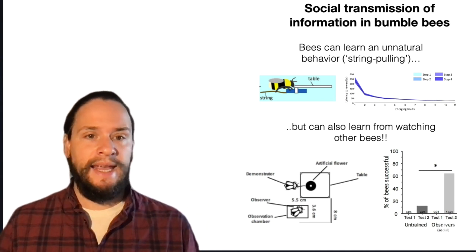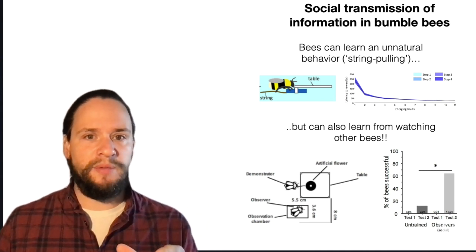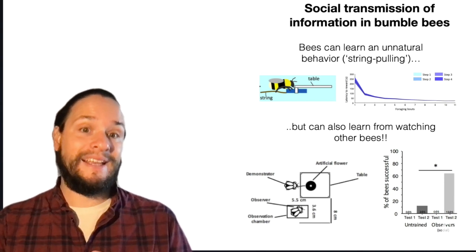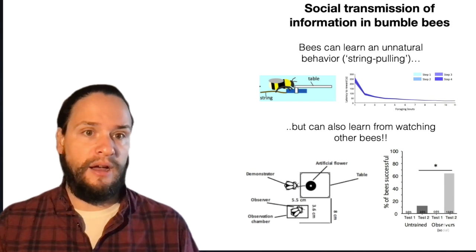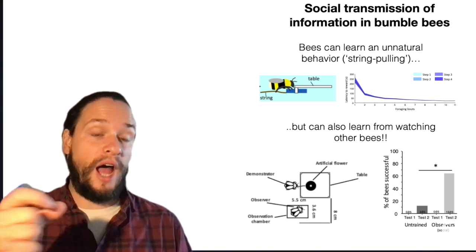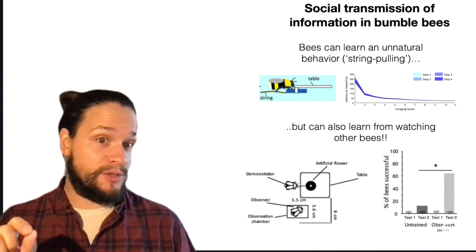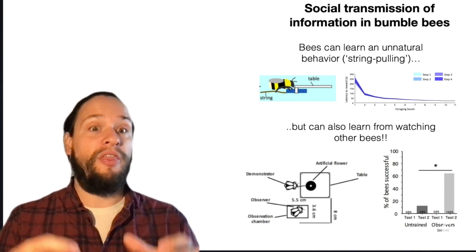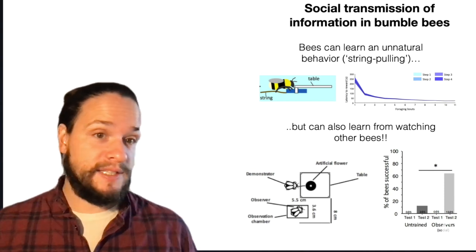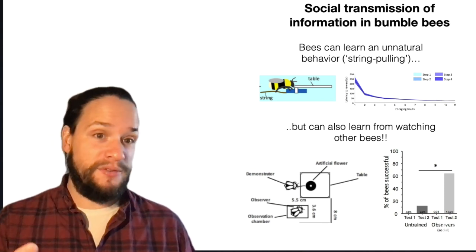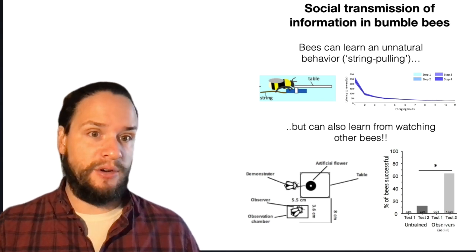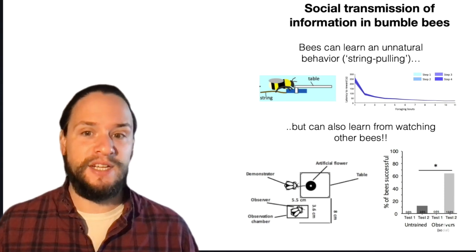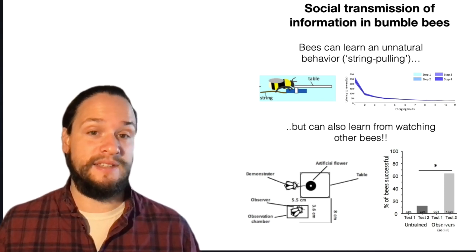But also, one of the most remarkable things is if, and this is a diagram down here, if you isolate a bee in a container next to, in a spot where she can watch a nestmate who has learned that strange behavior over a long time, perform that behavior, that bee that got to watch her nestmate solve that problem will be much faster, even though she's never done it herself, she learns by watching and sort of paying attention to what her nestmate is doing.